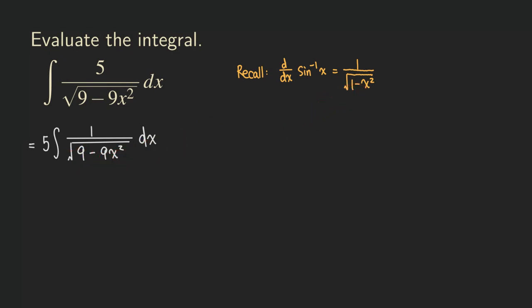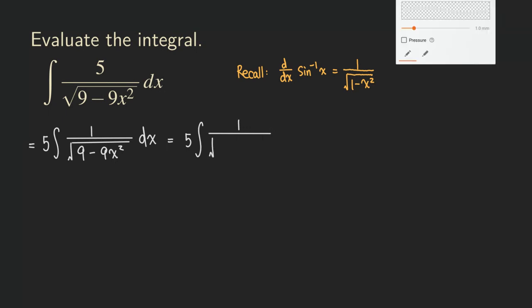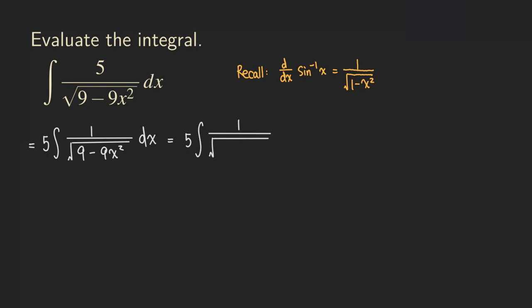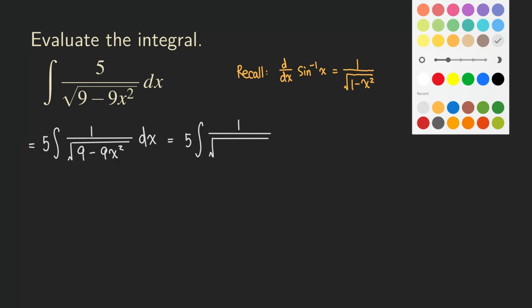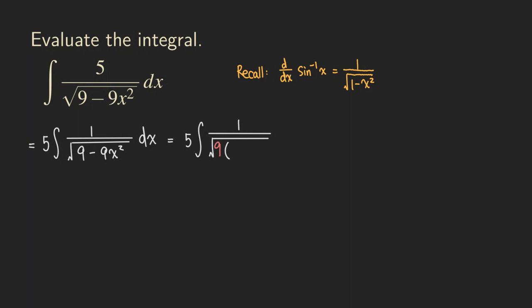So we get 5 times the integral of 1 over the square root of - we do the factoring - it would be factoring out the 9 so we get the 9, and then it becomes 1 minus x squared, and then the dx. So 9 times 1 is 9, and 9 times negative x squared is negative 9x squared.